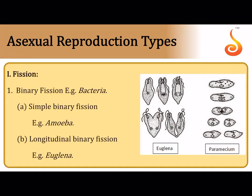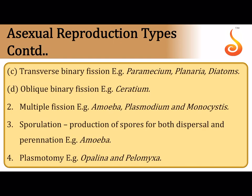In asexual reproduction, binary fission is where a cell splits into two. In amoeba it is simple; in euglena the division axis is longitudinal; in paramecium, diatoms, and planaria it is transverse when the axis is horizontal; and oblique when there is no definite axis for division. In binary fission, one cell forms two cells.